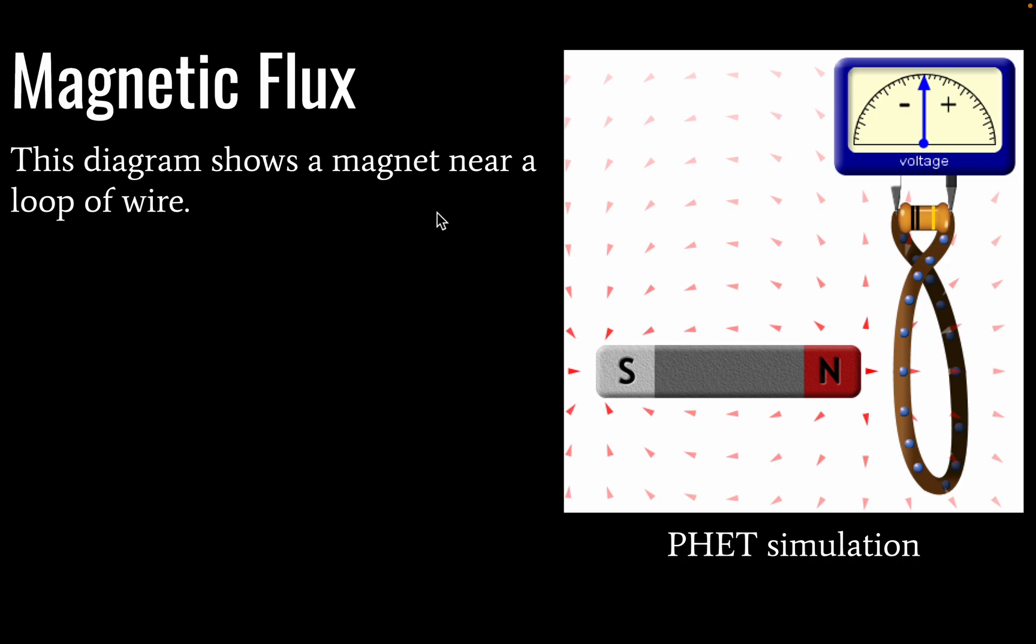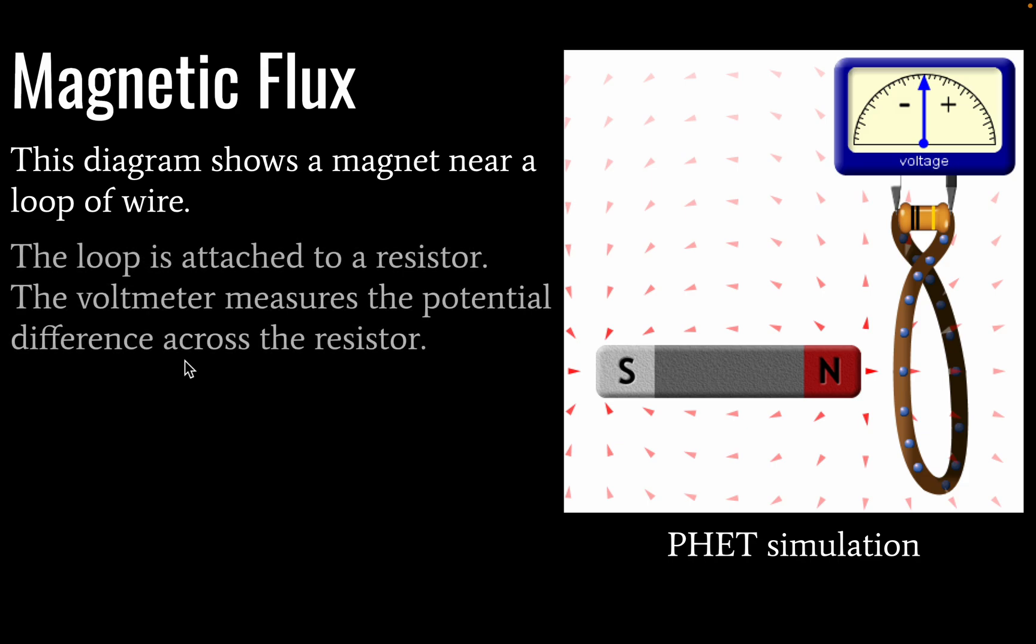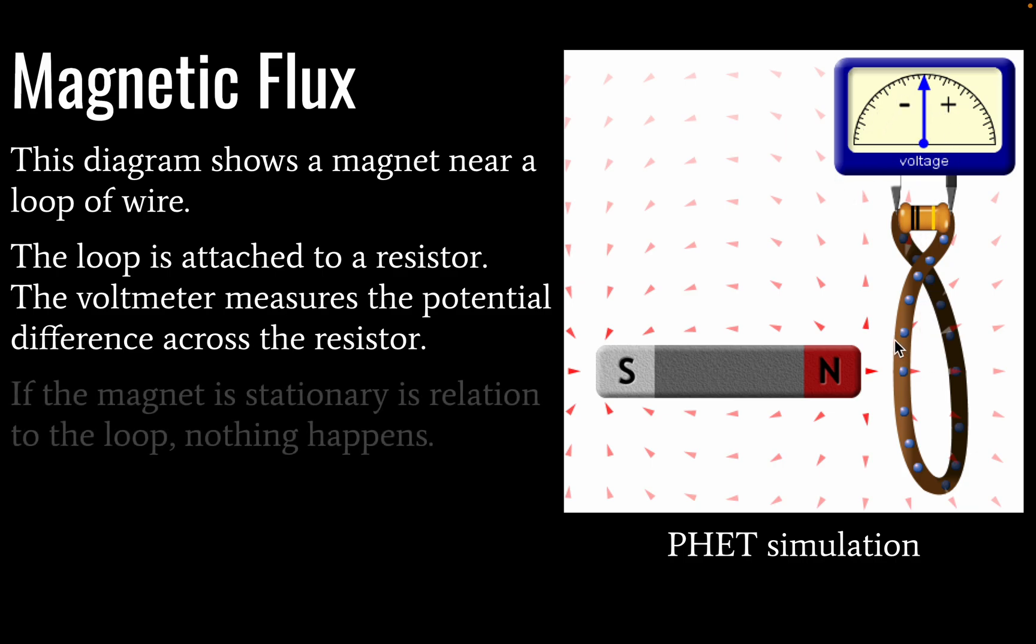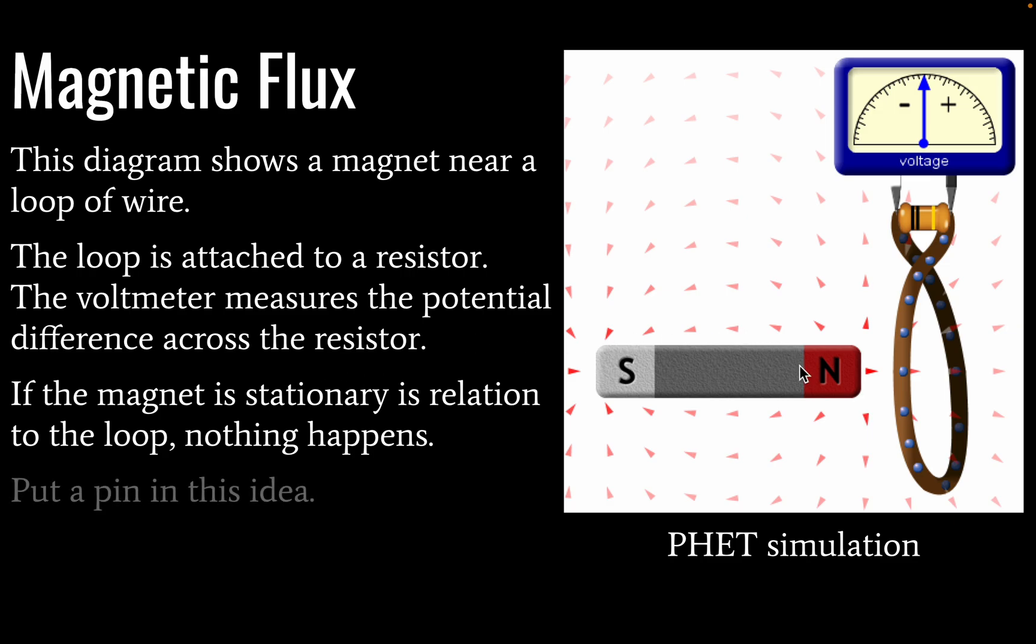So this diagram is showing a magnet near a loop of wire. So this loop is attached to a resistor, as you see here, and we have a voltmeter measuring potential difference across the resistor. If our magnet remains stationary to a loop, nothing is going to happen. And just hold on to that thought.